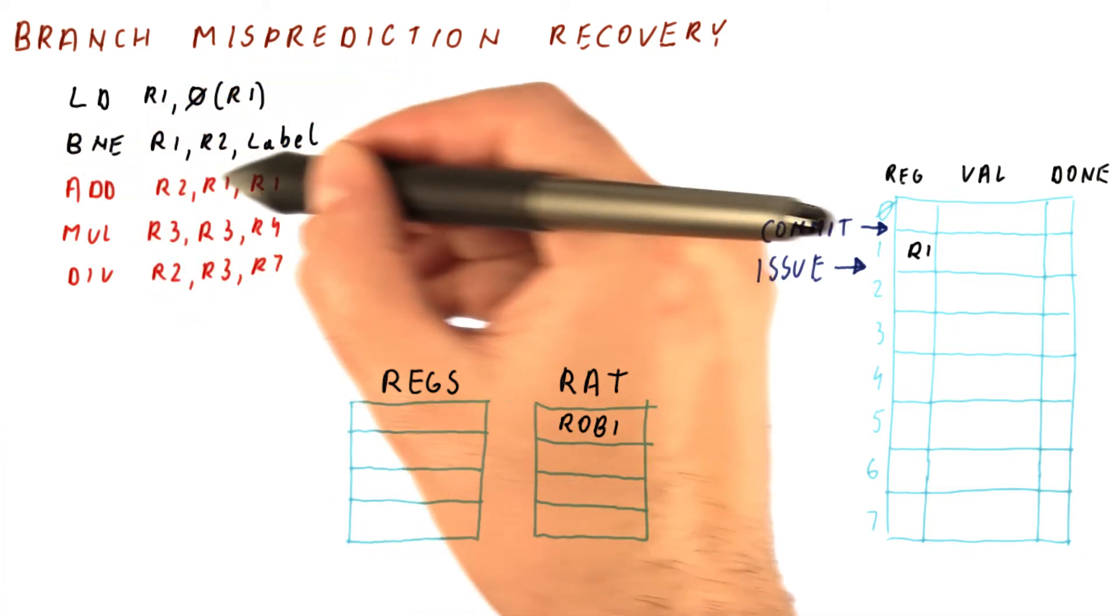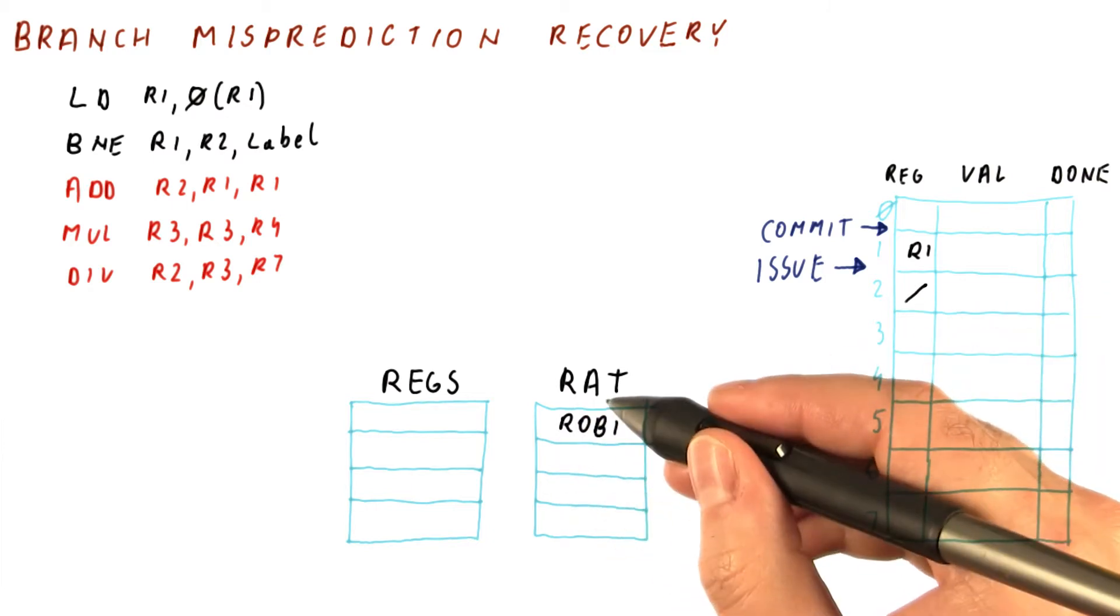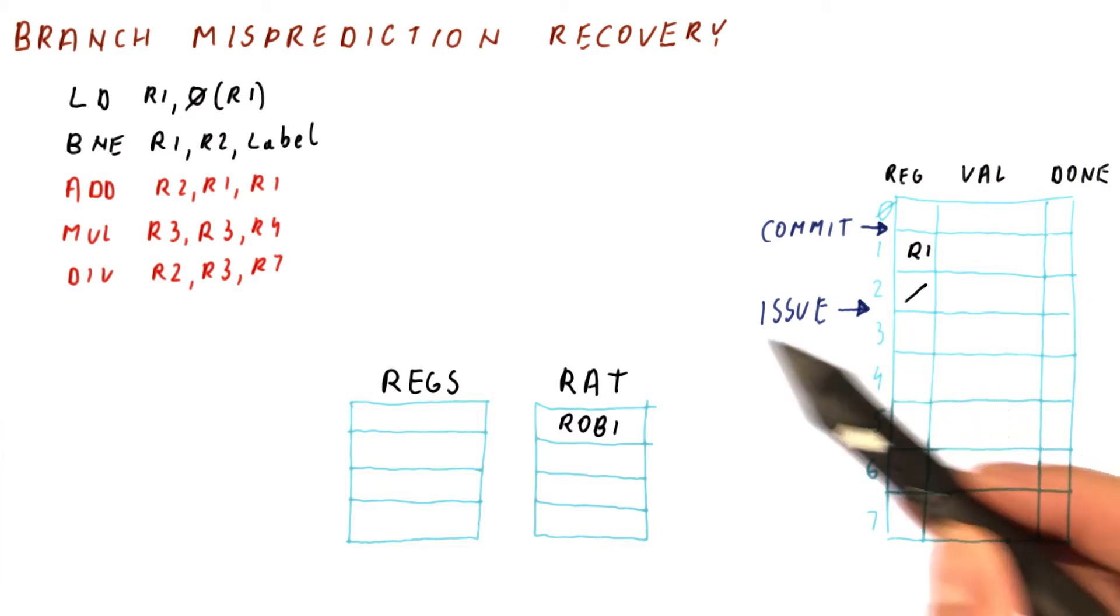When we issue the branch, it produces no output, and thus we don't need to rename anything, and our issue pointer moves here.